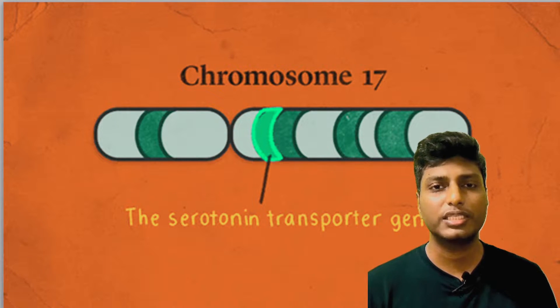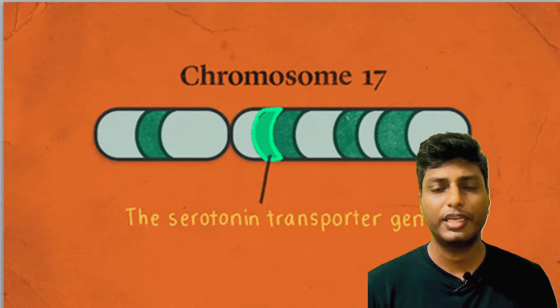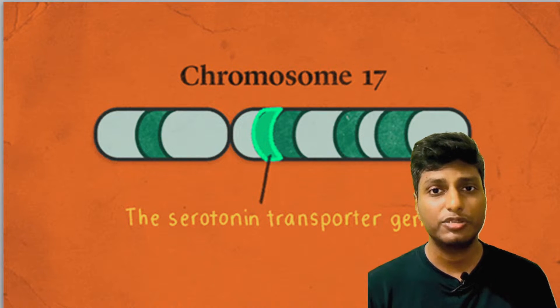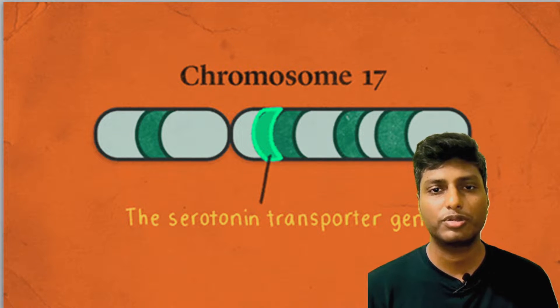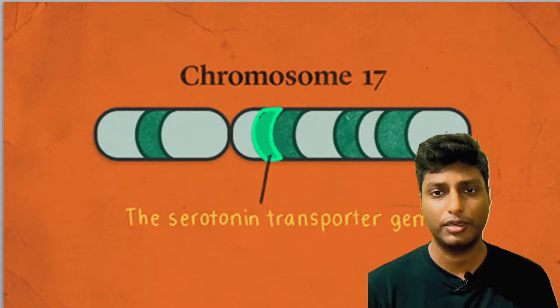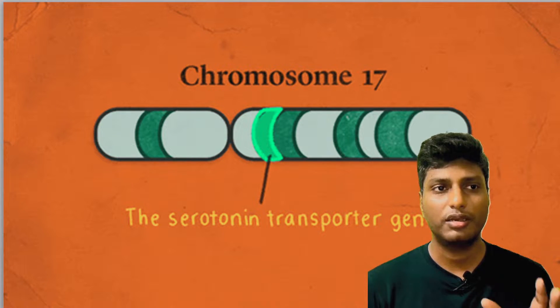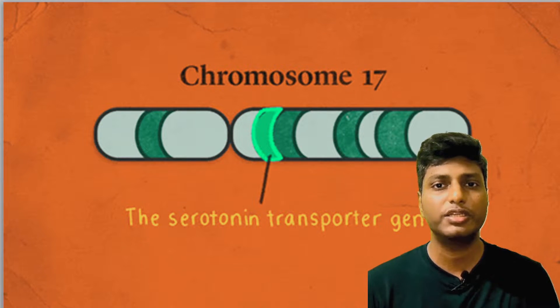These chromosomes are nothing but a condensed form of chromatin fibers, and inside these chromatin fibers lies our DNA. This DNA contains the information of all the characters of our body — like skin color, hair color, eye color, etc. For example, on chromosome number 17, there are many genes present. Each of these genes codes for different proteins; for instance, one particular gene on this chromosome codes for a protein known as serotonin.